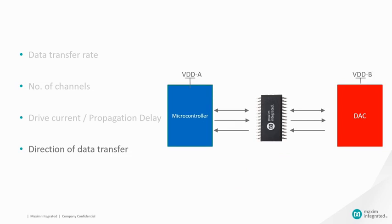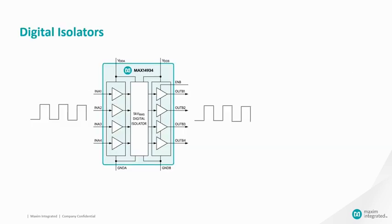Direction of data transfer is another consideration. The direction can be either unidirectional or bidirectional. While selecting a level translator, care should be taken to select the proper data direction. If an application requires a level translator with galvanic isolation between input and output, including isolation to grounds, digital isolators are used.